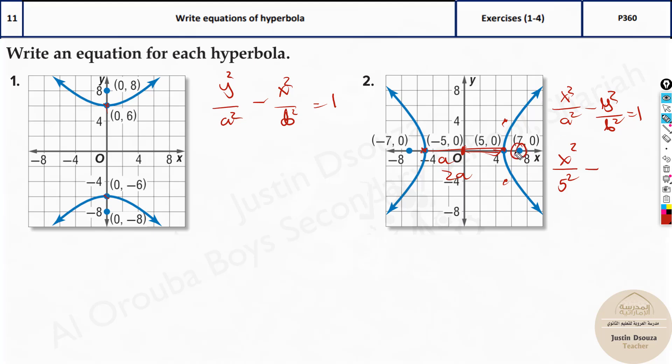But you know the focus point. Focus point is 7. There is a formula that relates all this. c squared equals a squared plus b squared. So I can easily find b squared value from these two. So b squared will be equal to c squared minus a squared.